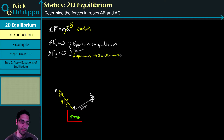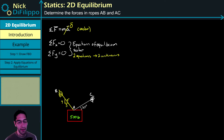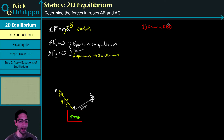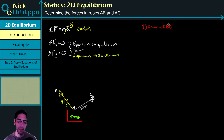Let's go over the steps needed to solve a 2D equilibrium problem. Step one is always draw a free body diagram. When we draw this free body diagram, we need to indicate the sense of all our forces — which way they're pointing — and the magnitude if we know them. If we don't know the magnitude of a force, we keep it as a variable; it will be unknown.